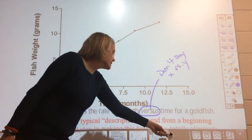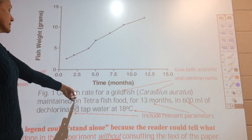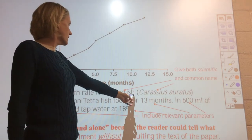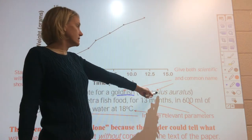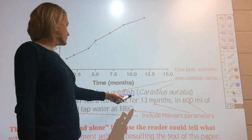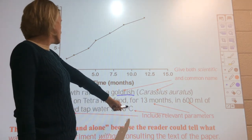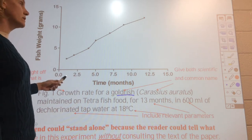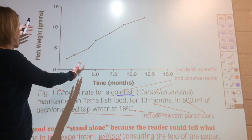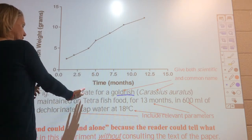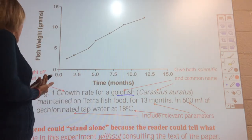Instead, state it as 'Growth rate for goldfish' — common name — followed by the scientific name in italics with genus capitalized — maintained on TetraFin fish food for 13 months in 600 mL of dechlorinated tap water at 18°C. This legend now gives enough information to understand the experiment: what organism, what conditions, what time period, and what temperature.